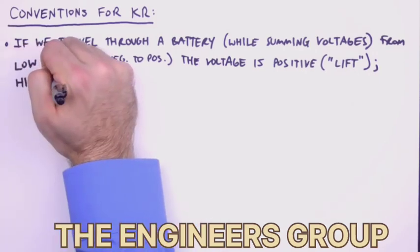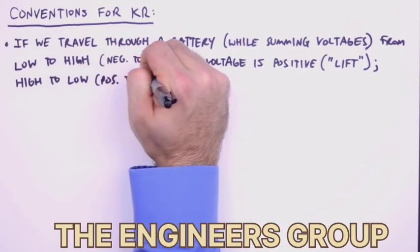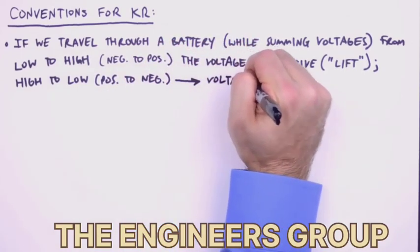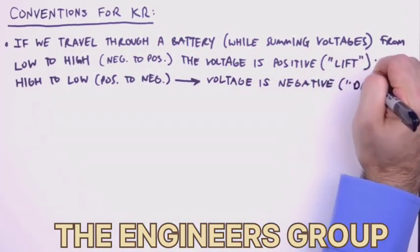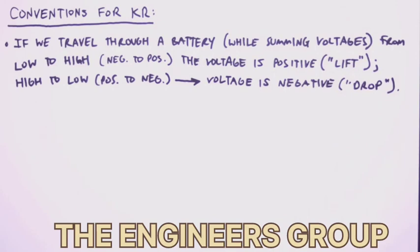If instead we travel through a battery high to low, that is positive to negative, the voltage is treated as negative, which we'll call a voltage drop because of the decrease in electrical potential. So for voltage sources, low to high, we have a positive voltage. High to low, we have a negative voltage.